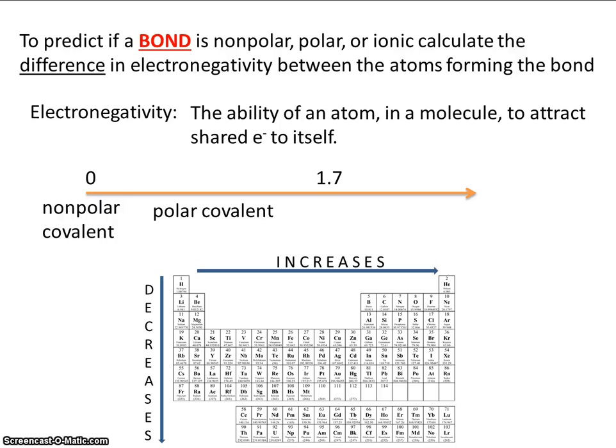If you subtract the two values and you discover that it's greater than 1.7, well, we would call that an ionic bond.